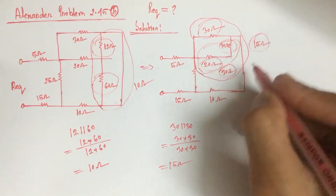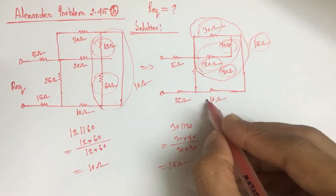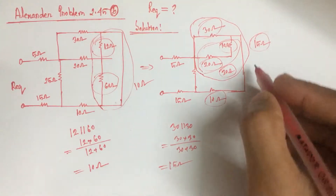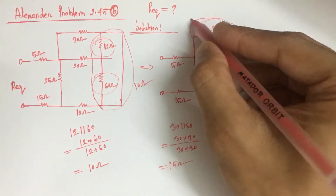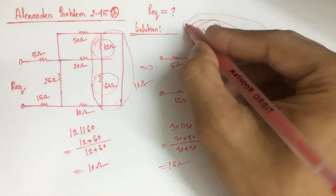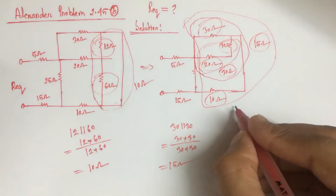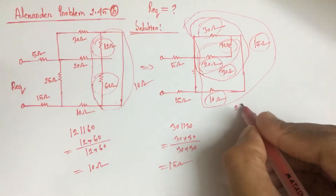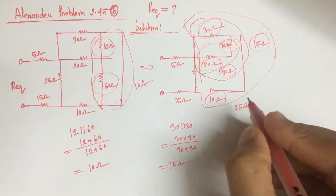Now, this 15 ohm resistance is in series with this 10 ohm. So the equivalent resistance of this part will be 25 ohm.